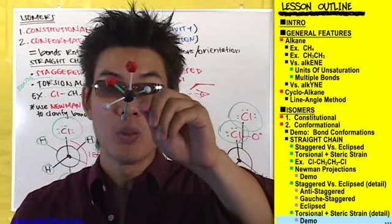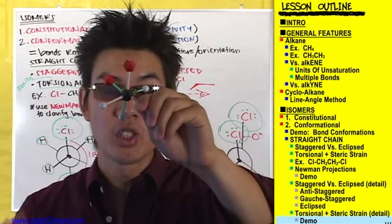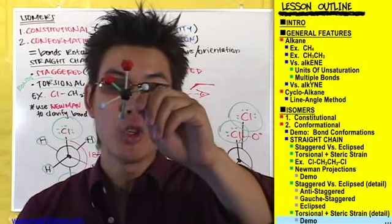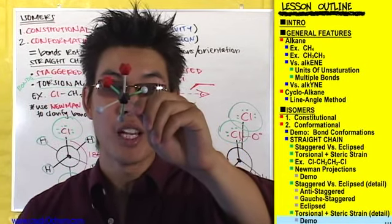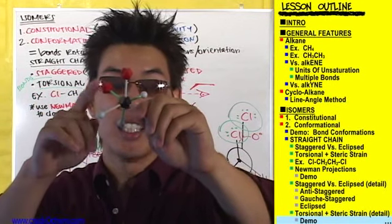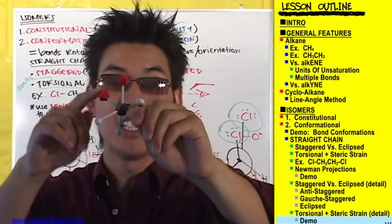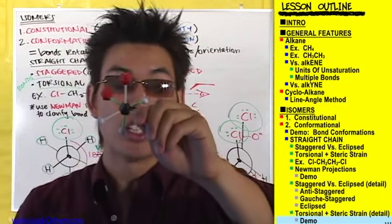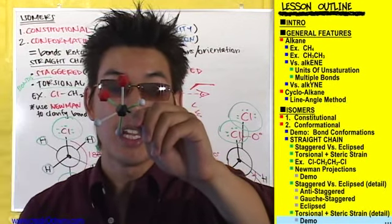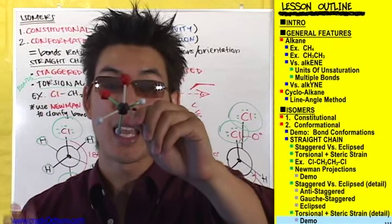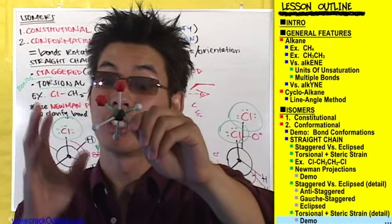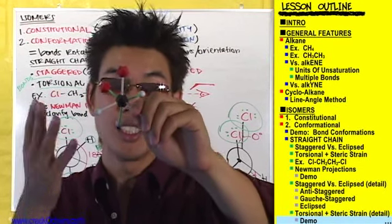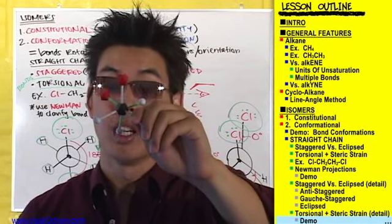Once the green bonds hit 120 degrees, that's the gauche staggered conformation. Now you can see that this chlorine is getting a little bit closer to this chlorine — they're starting to invade each other's space, but the bonds and atoms are still staggered. So this is the gauche staggered conformation.